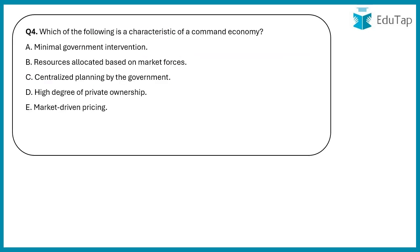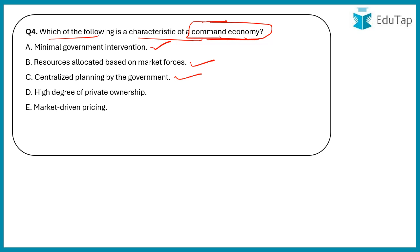Question 4: Which of the following is a characteristic of a command economy? Options include: minimal government intervention, resources allocated based on market forces, centralized planning by the government, high degree of private ownership, and market-driven pricing. The correct answer is option C — centralized planning by the government. The word 'command' itself implies that one authority is in charge. In a command economy, the government makes every decision regarding the allocation and production of resources.